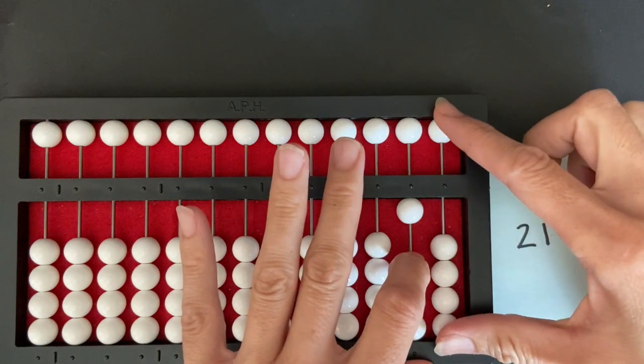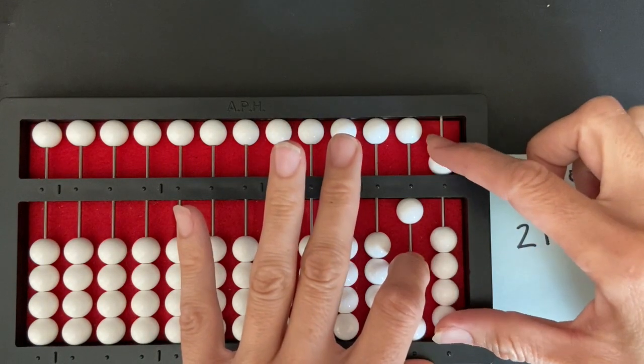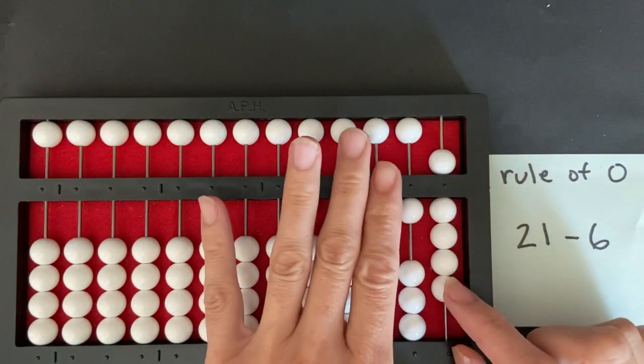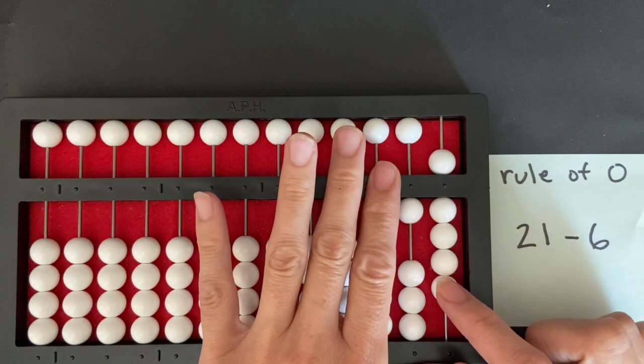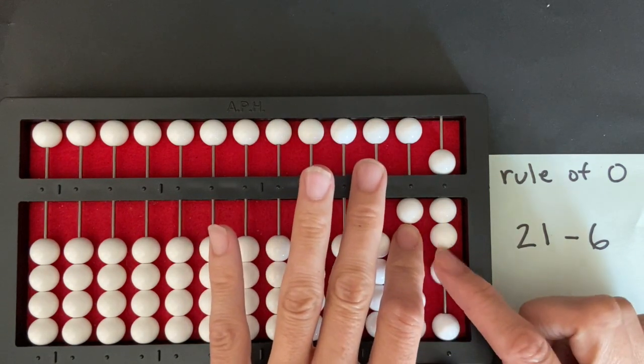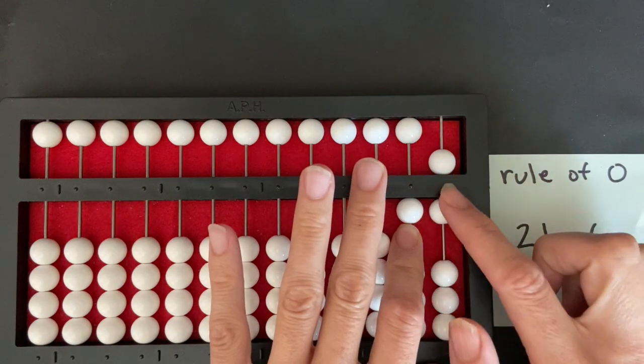As I push it away I return nine beads on the units bar. And then I continue pushing beads away from the counting bar in the units rod. Three, four, five, six.